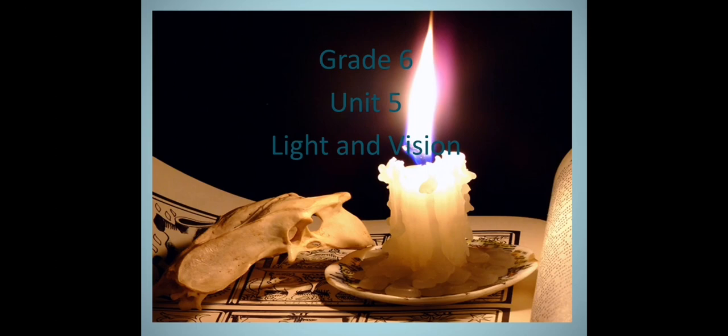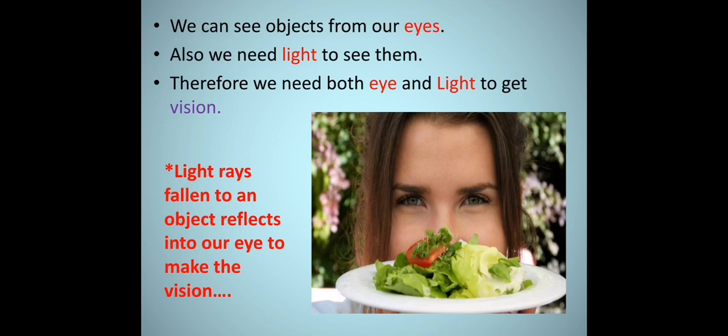Hello, welcome to Live Science Live. Today we are going to talk about light and vision, the fifth unit of our Grade 6 science syllabus. This video will provide you an easy way to learn light and vision. We can see objects from our eyes, but we also need light to see them. Therefore, we need both eye and light to get vision. We have five sense organs; among them, the eye is necessary for vision, and light is the other necessary factor. Light rays fall onto an object, reflect into our eye, and make vision possible.